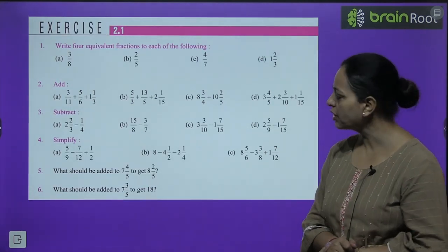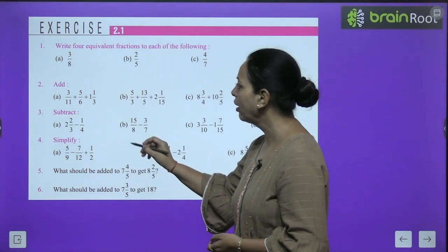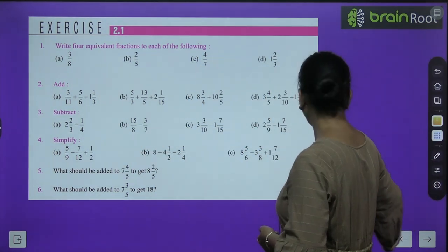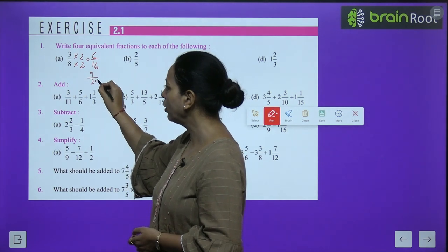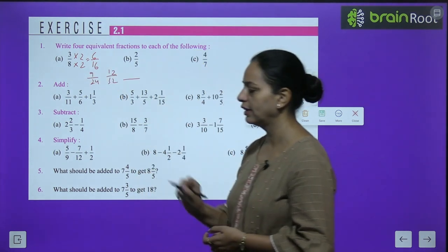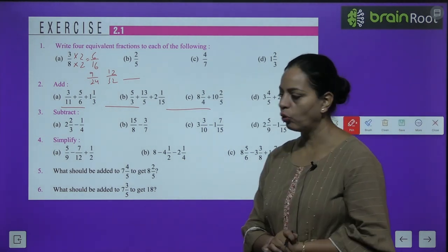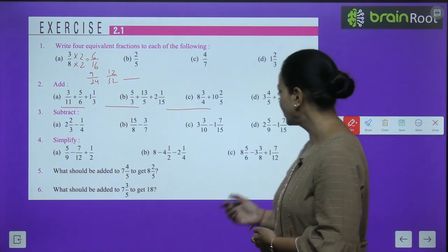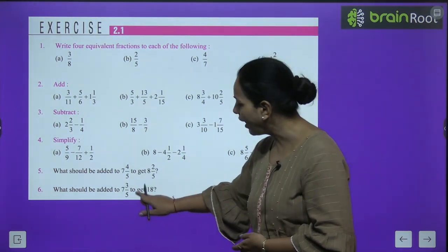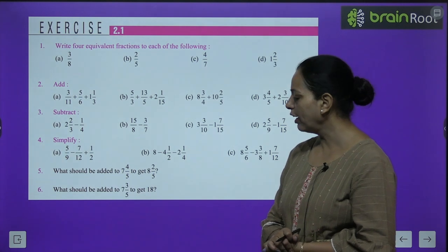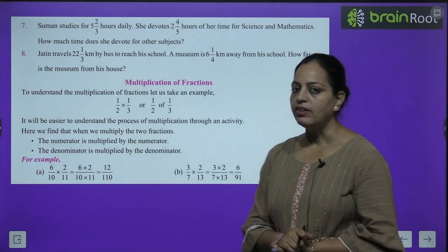Exercise 2.1: Write 4 equivalent fractions of 3/8 — multiply: 6/16, 9/24, 12/32, and so on. Other questions involve addition and subtraction — you can try those on your own. Question 6: what should be added to a given fraction to get 18? Subtract the given fraction from 18 to find the answer.